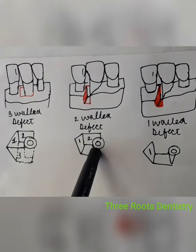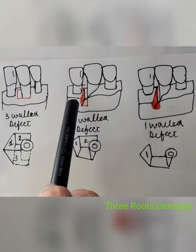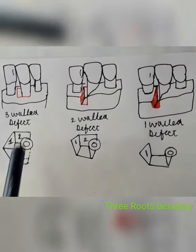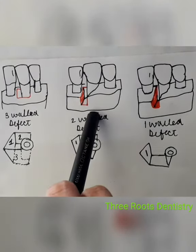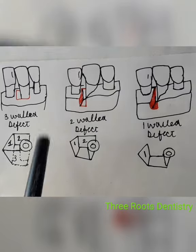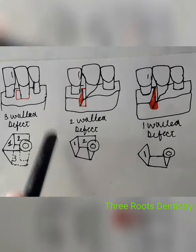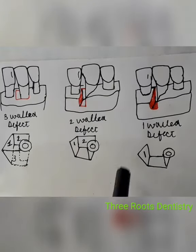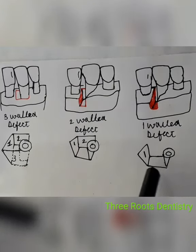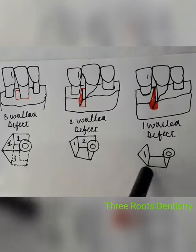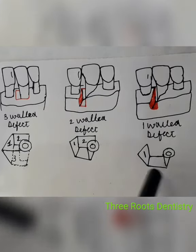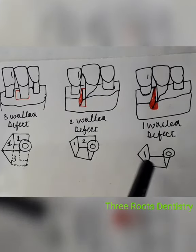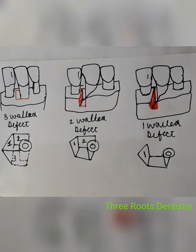In the second figure you can see this is the two-wall defect, which means only two walls are present — this is the distal and that is the lingual wall. Therefore, this is called the two-wall defect. And this is the one-wall defect, which means only one wall, that is the distal wall, is present. Therefore, it is called the one-wall defect.